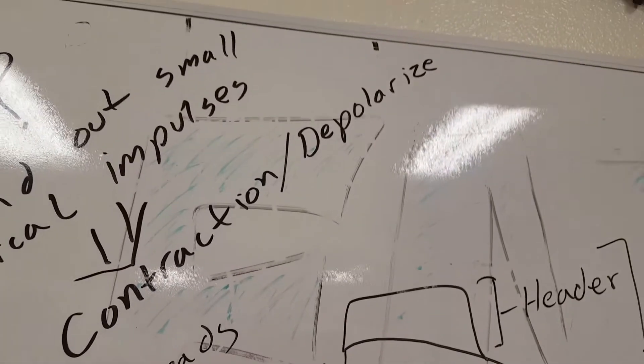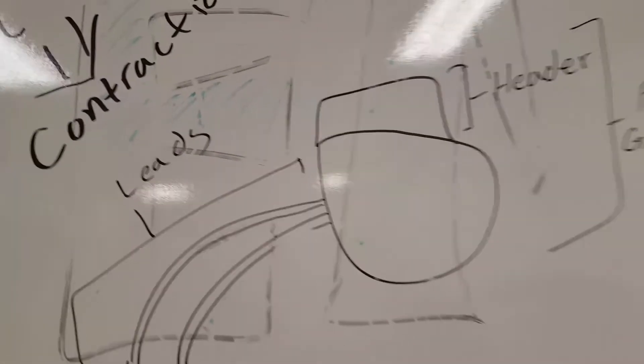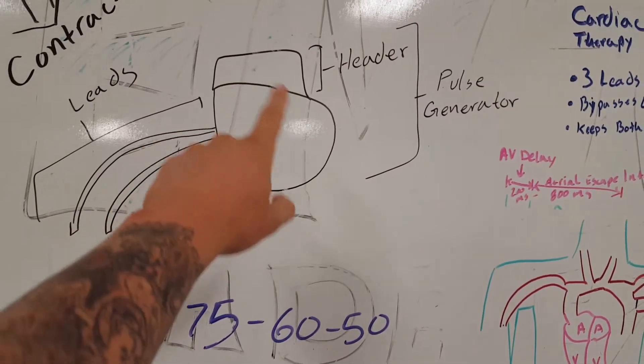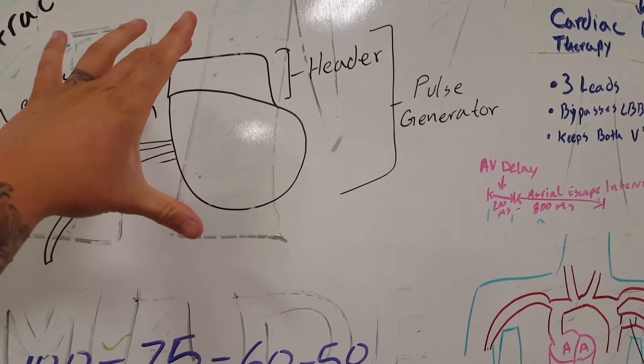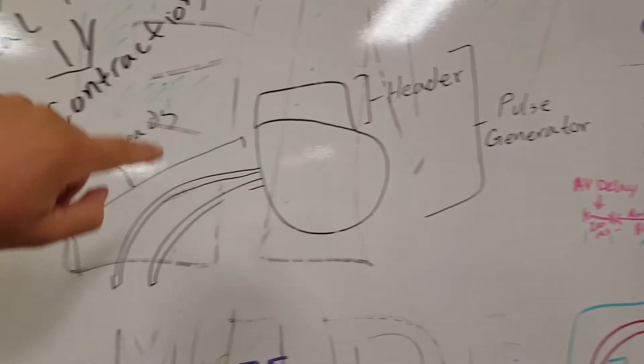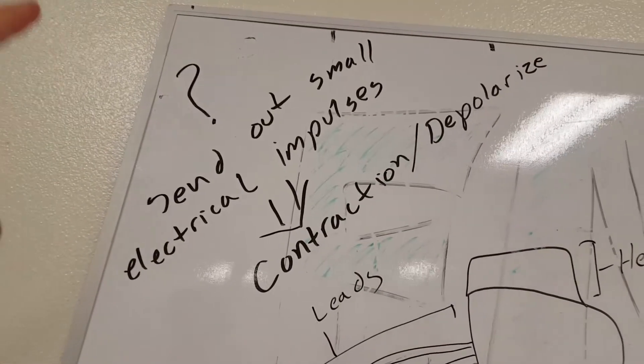Alright, so we got the breakdown. This is what a pacemaker somewhat looks like. You got the pulse generator - the entire body is called the pulse generator. The top part is called the header. You have the wires, which you call the leads. What does it do? It sends small impulses to the heart so it can contract, squeeze.